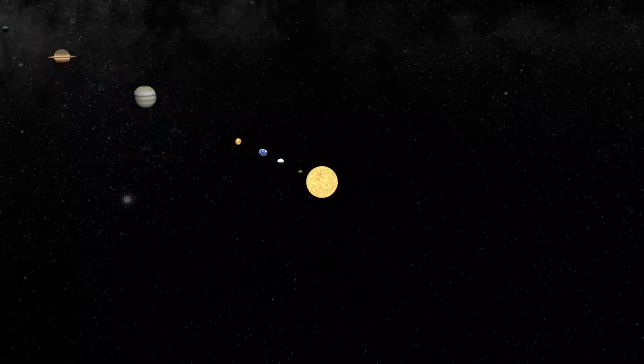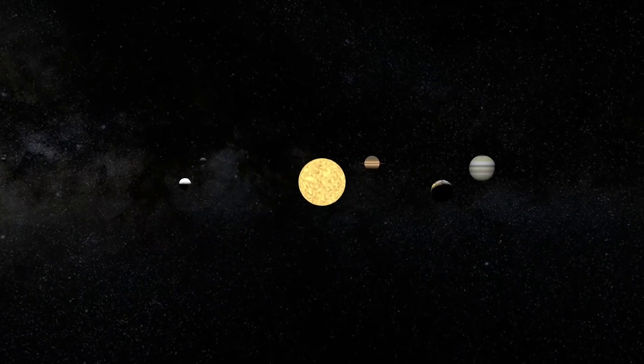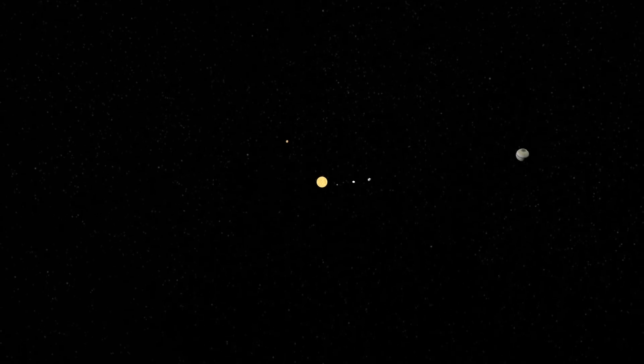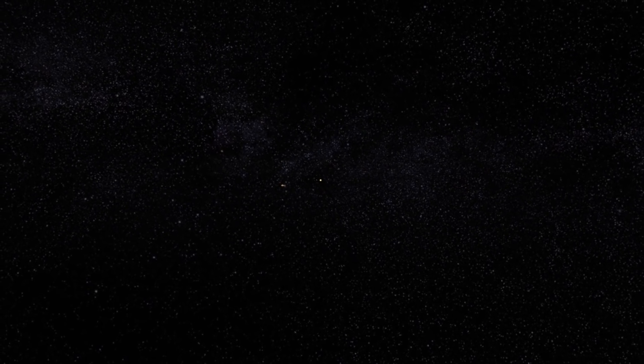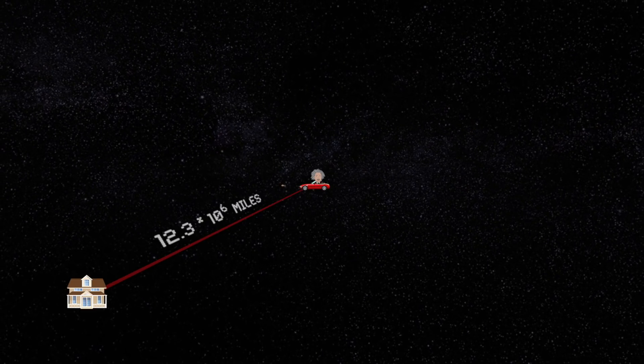Of course, it gets even more complicated because the solar system itself is traveling at 143 miles a second through the Milky Way galaxy. Thus, if you waited about 24 hours to return to your house, you would be at least approximately 12.3 million miles from your initial location in space.